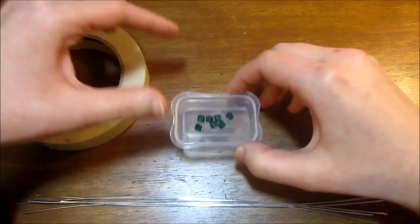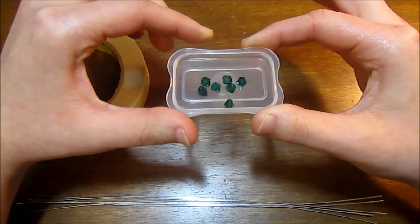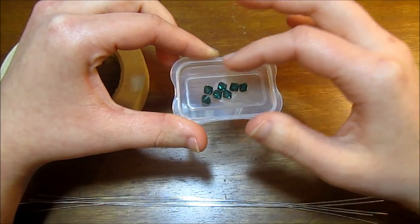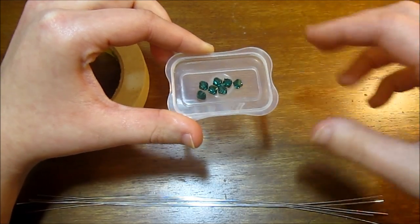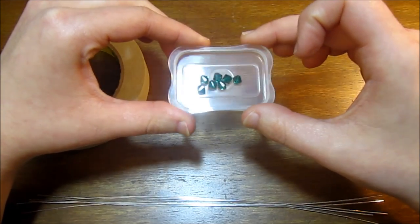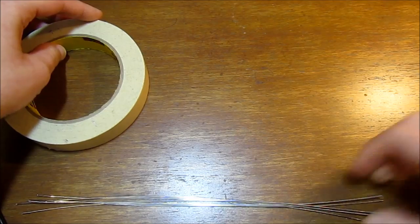You'll also be needing some beads. I'm going to be using six millimeter bicone Swarovski crystals in the color emerald. You can really use anything you like. If the hole in the bead is too small to accommodate the wire, you'll just need to get a bead reamer to fix that up. Really, anything will work fine for this.